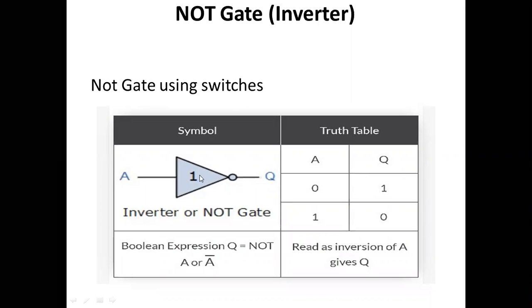For the NOT gate symbol, input A gives output A bar. The Boolean expression is Q equals NOT A — that is, when input is 0, output is 1, and when input is 1, output is 0. This is the inversion or complement of A — that is the NOT gate.